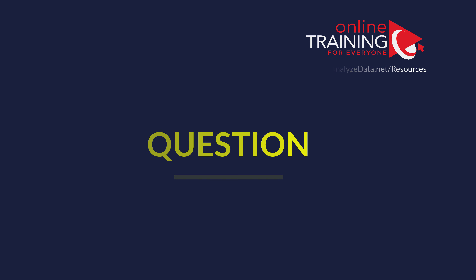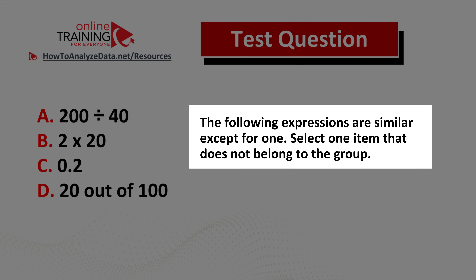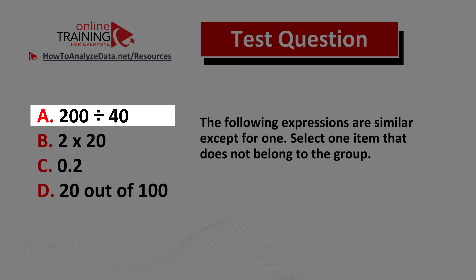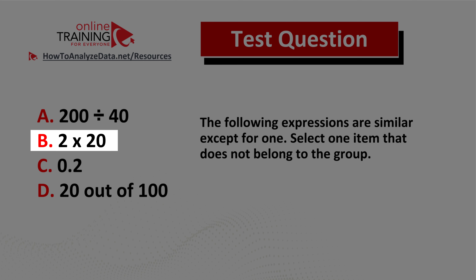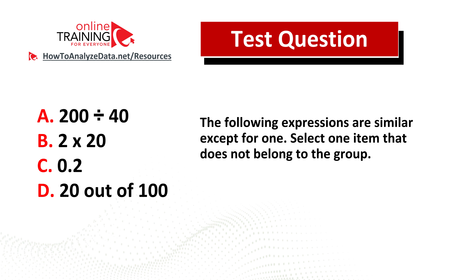Let me share with you an interesting question from the test. The following expressions are similar except for one — select the item that does not belong to the group. You have four items: 200 divided by 40, 2 multiplied by 20, 0.2, and 20 out of 100. Do you think you know the answer? Now might be a good time to pause this video to see if you can come up with the solution on your own.